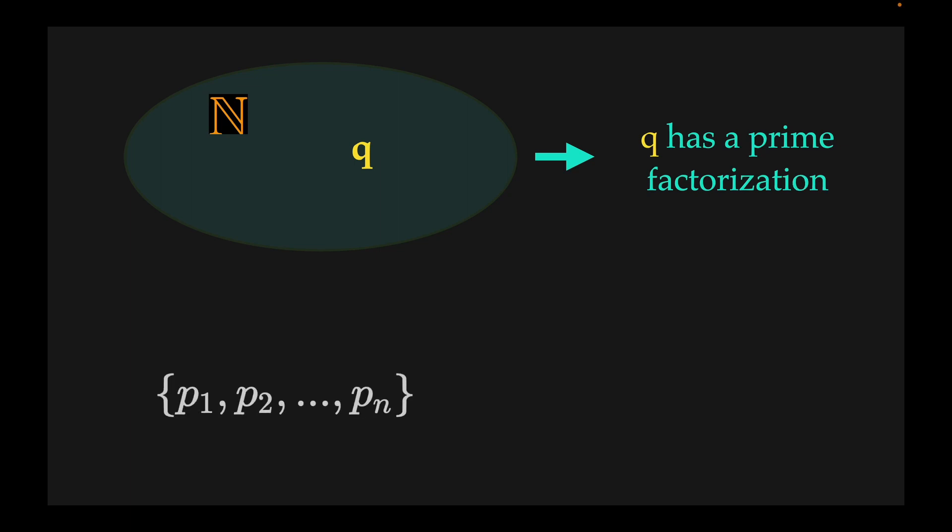Since q is a natural number, it must have a prime factorization. This means out of the finite set of prime numbers, we can pick out at least one prime number, pI, which will be a divisor of q.